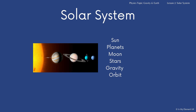So obviously there is the sun. There are planets. You've got moons around those planets — sometimes there's more than one. You've also got stars, and you've got the force of gravity, and orbiting is taking place. Those are key words that you need to know how to use to explain what makes up the solar system.